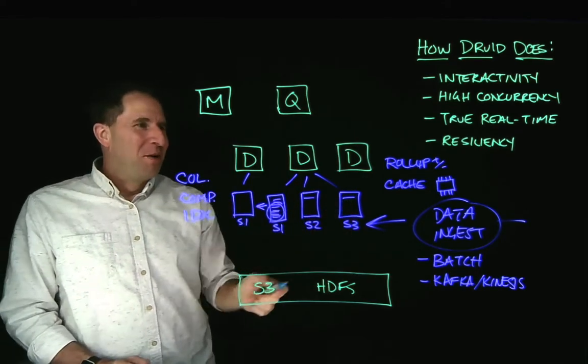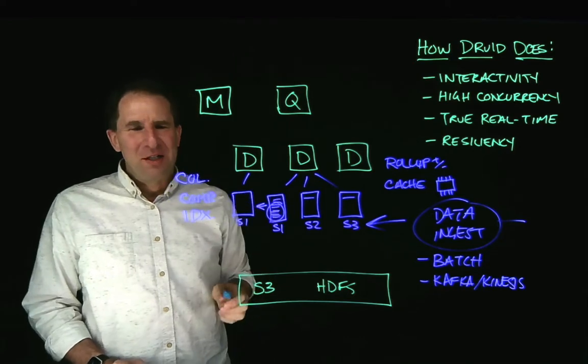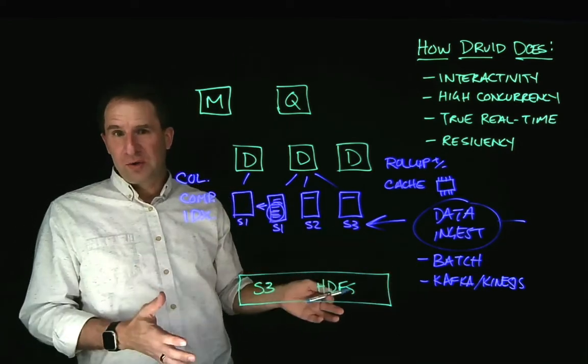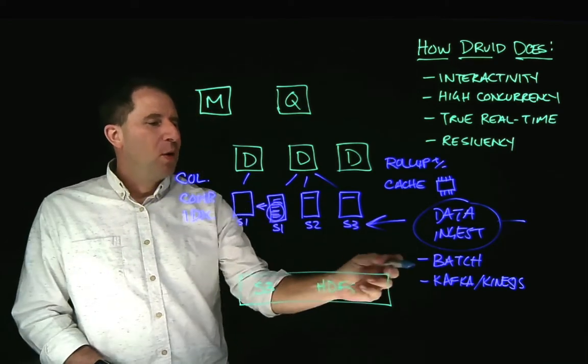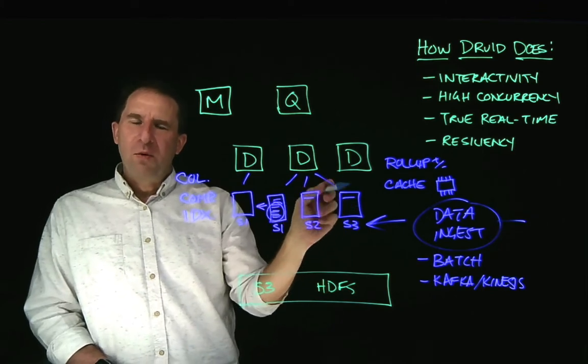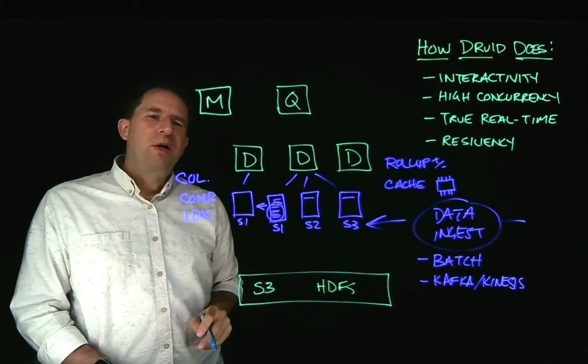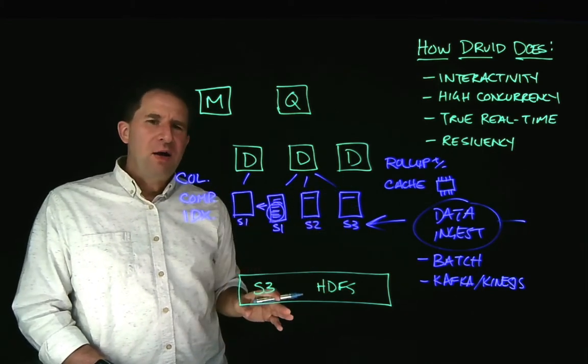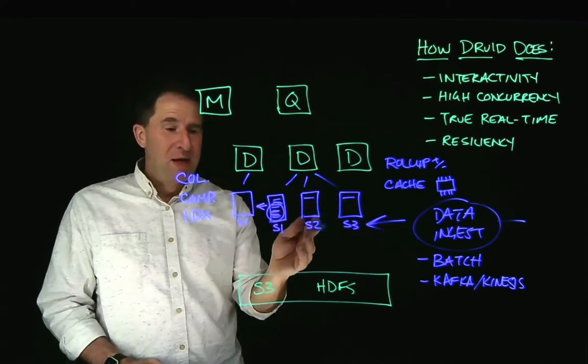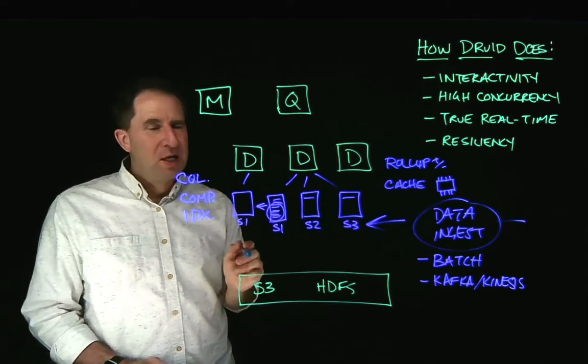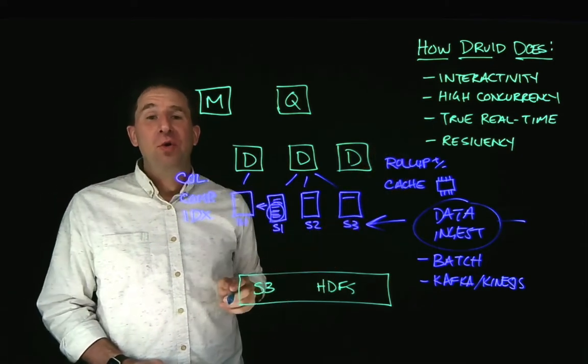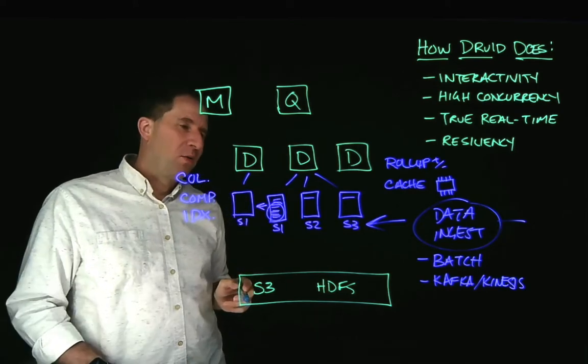Now, the cool thing about true real-time ingestion, not only do we natively support Kafka's API and anything else that uses Kafka's API and Kinesis, but when real-time data comes into the cache, you can actually query it while it's there. We call it query on arrival. Everybody else has got to wait for the data to be sorted out and put onto storage or maybe even persisted to deep storage, not Druid.